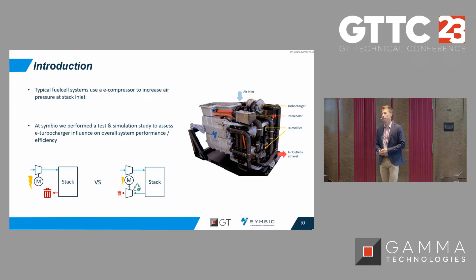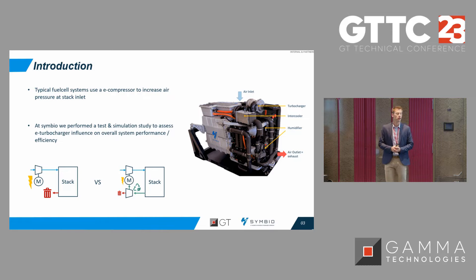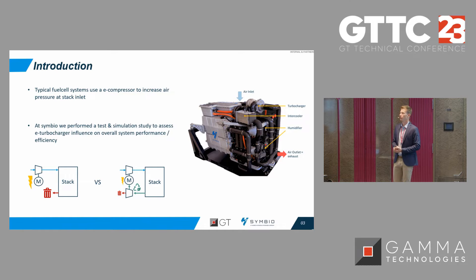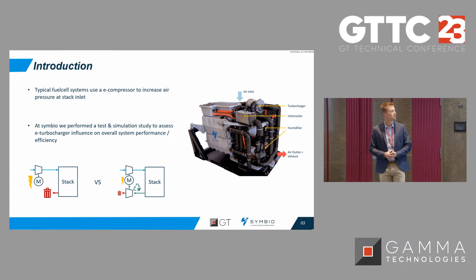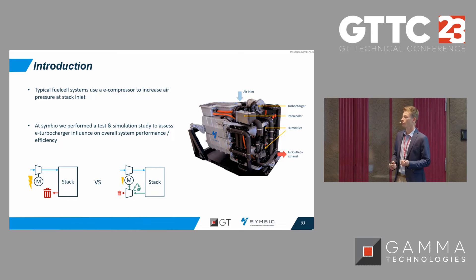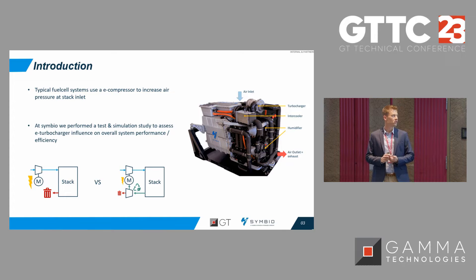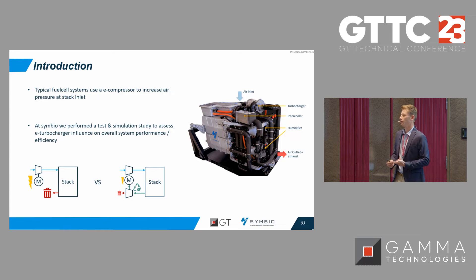A fuel cell system is composed of a fuel cell stack where hydrogen and oxygen are transformed into electricity. The system has auxiliaries to condition the gas for better performance and efficiency. In this specific case, we have a turbo compressor to increase the pressure of the air, an intercooler to cool down the air, and a humidifier to get the air at the right level of humidity.